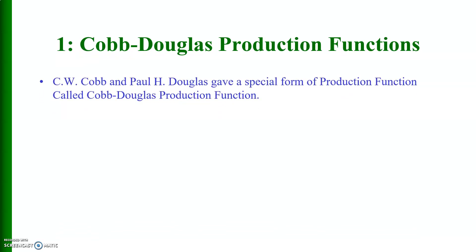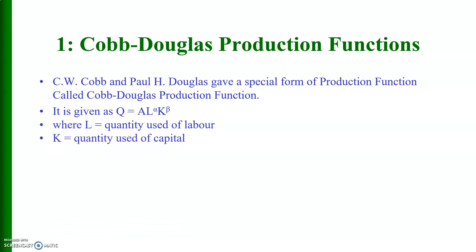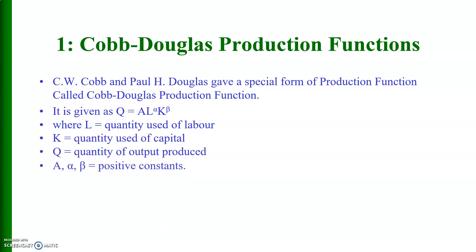Let me start with the Cobb-Douglas production function. Cobb-Douglas production function is basically a special form of production function that was developed by Charles Cobb and Paul Douglas. This specific production function may be given as: Q = A · L^α · K^β, where L is the quantity of labor used, K is the quantity of capital input used in the production process, Q is the quantity of output produced, and A, α, and β are positive constants.